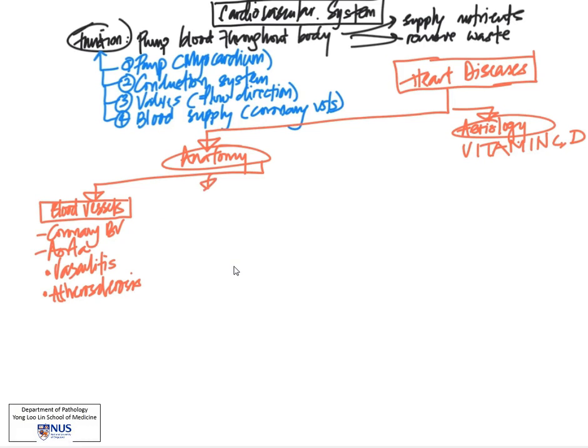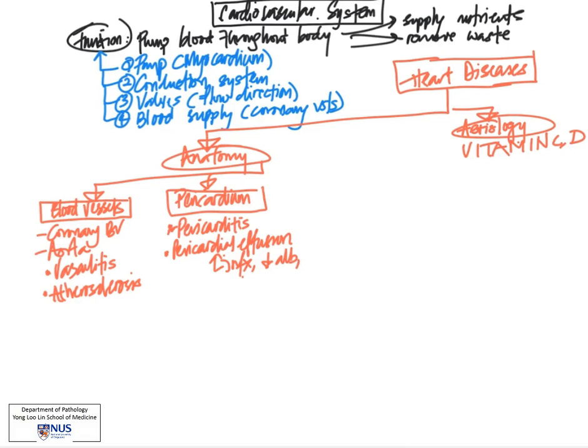The next anatomical compartment we're going to look at is the pericardium. One of the conditions would be pericarditis, which has an inflammatory etiology, can also be infective. Pericardial effusion is essentially collection of fluid in the pericardial cavity. This can have a variety of etiologies: infection, decreased plasma oncotic pressure due to low albumin, or malignancy.